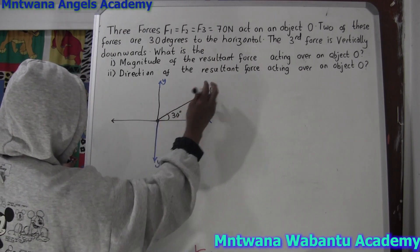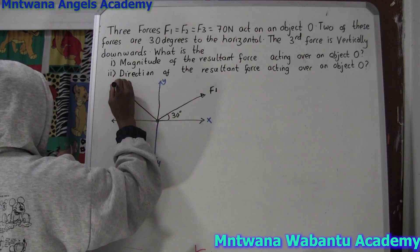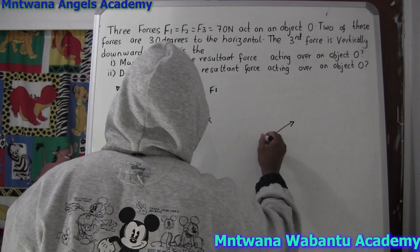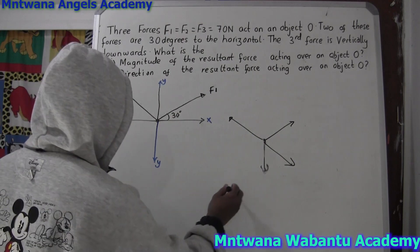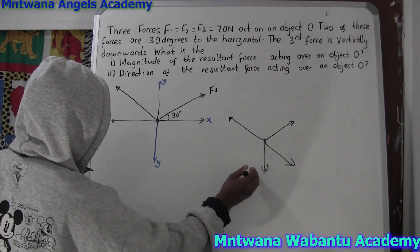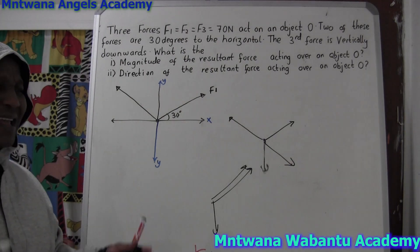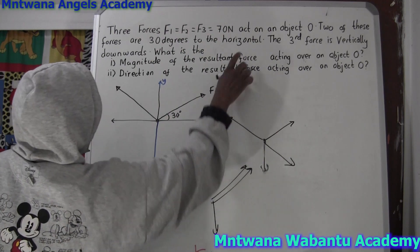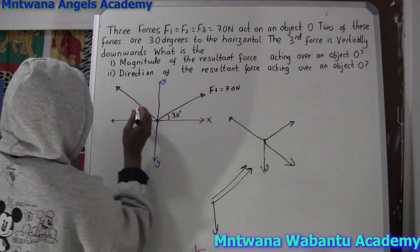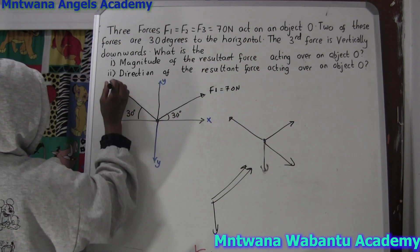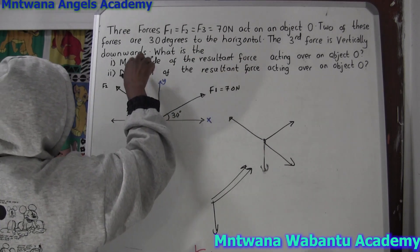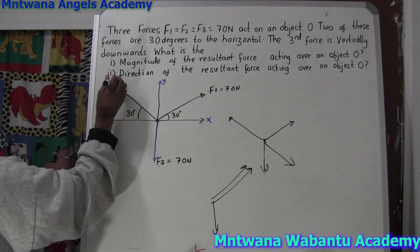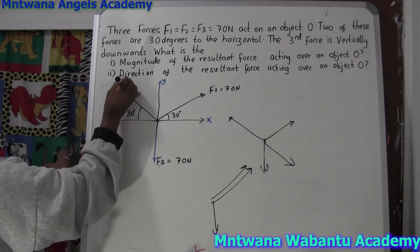So this is F1 at 17 newtons, and another force also makes 30 degrees to the horizontal. I'd rather draw them on opposite sides — one force pulling this way, another pulling the other way, and the third pulling down. That makes more sense for getting a resultant. So this is F2, also at 70 newtons, and the third force F3 acts vertically downward, equal to 70 newtons.